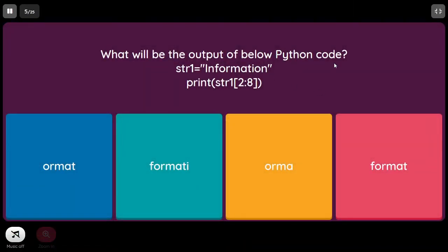What will be the output of the below Python code? str1 equal to 'information', print str1[2:8] — that is from index 2 to index 7. Whatever end value is given, it is exclusive, not inclusive. So characters from index 2 to index 7 will be printed, and indexing begins from 0.